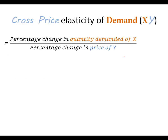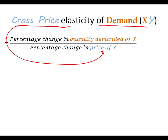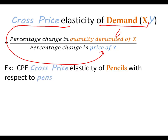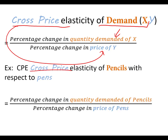Here we have the formula for cross-price elasticity of demand for x. The first word — whatever comes before 'elasticity' — is the percentage change that goes in the denominator. Whatever comes after the word 'of demand,' in this case demand for x, that's what goes in the numerator. For example, with the cross-price elasticity of pencils with respect to pens: pencils, after the word 'of,' is our quantity in the numerator. The cross-price is for the other good — pens — which goes in the denominator.